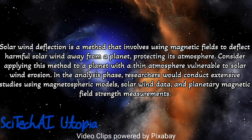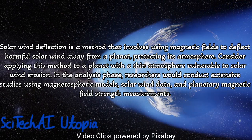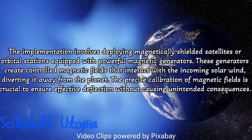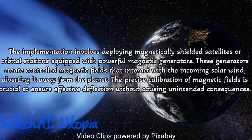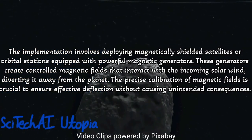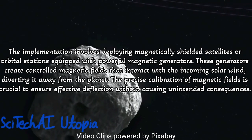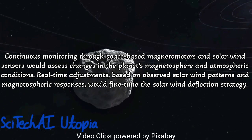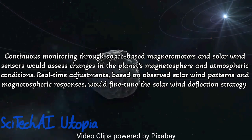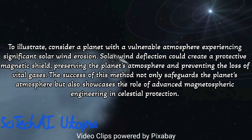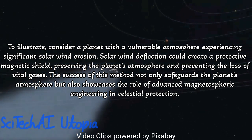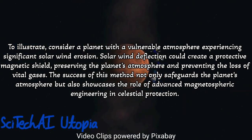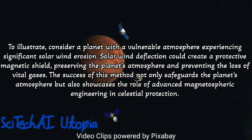Method 20: Solar Wind Deflection. Analyze the target planet's magnetic field strength and susceptibility to solar wind, considering factors such as distance from the host star and atmospheric composition. Develop a solar wind deflection strategy, potentially involving the deployment of large magnetic shields or shield-like structures in space to protect the planet's atmosphere. Implement advanced magnetic field generators capable of producing a protective barrier against solar wind without negatively impacting the planet's natural magnetic field. Model the interaction between the artificial magnetic field and solar wind to optimize deflection and minimize energy consumption, with continuous monitoring for real-time adjustments.